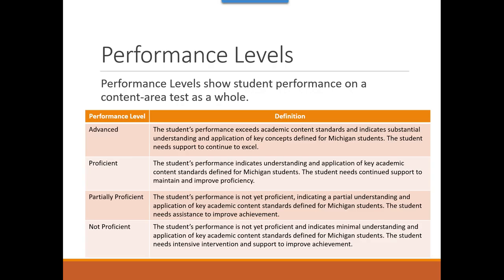Performance levels are based on the scale scores that determine whether a student scored advanced, proficient, partially proficient, or not proficient in the assessed content area. Each performance level is based on what students know and are able to do based on Michigan's content standards — they are descriptors of content area performance. An advanced proficiency level indicates performance that has exceeded grade-level content standards. Proficient indicates performance that meets grade-level content standards. Partially proficient indicates performance that shows a partial understanding of grade-level content standards.